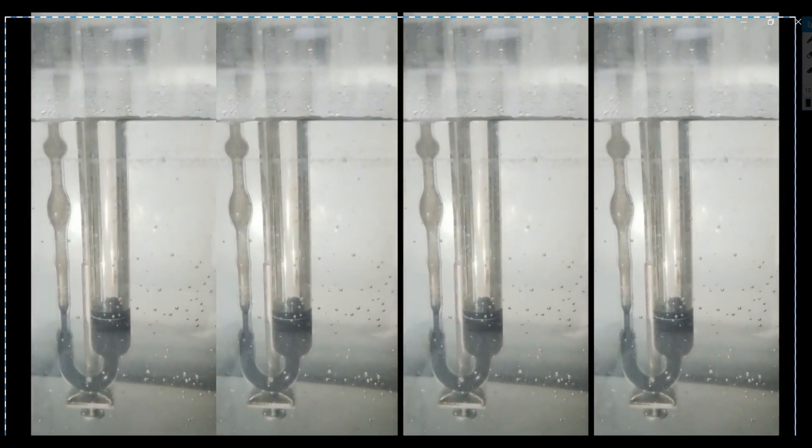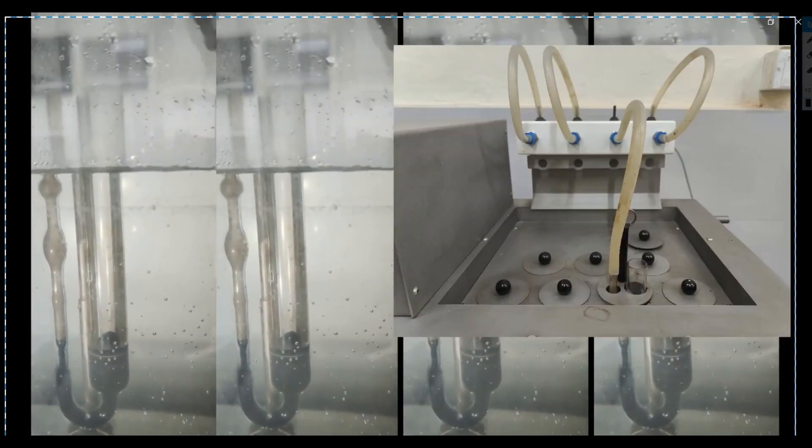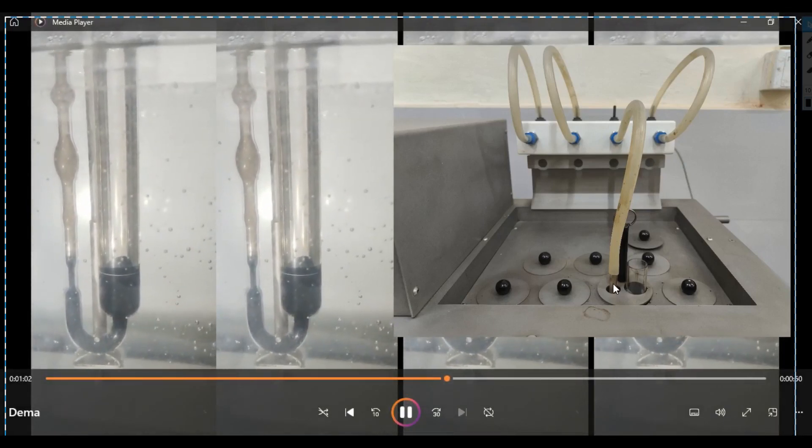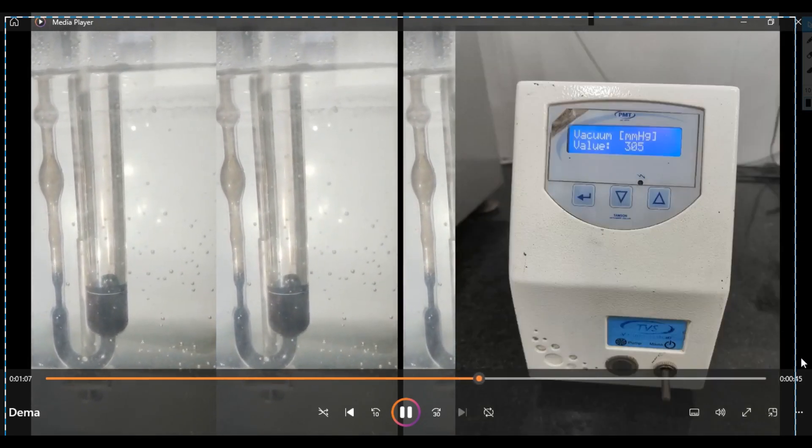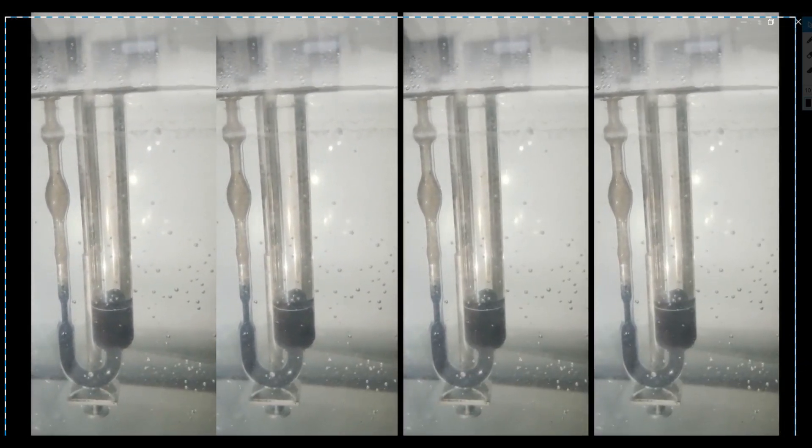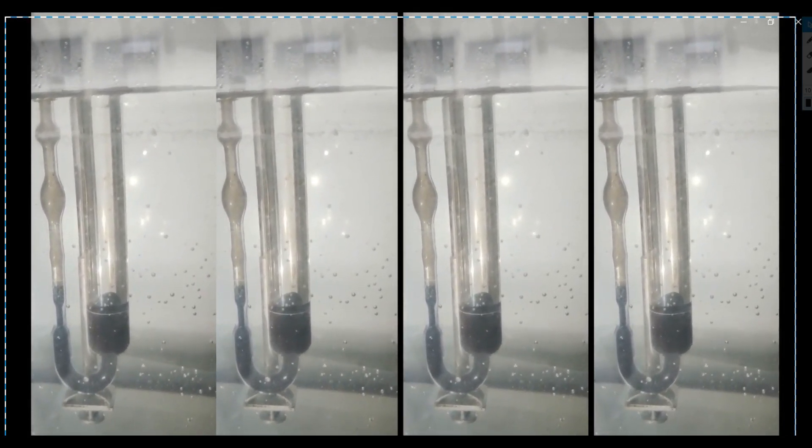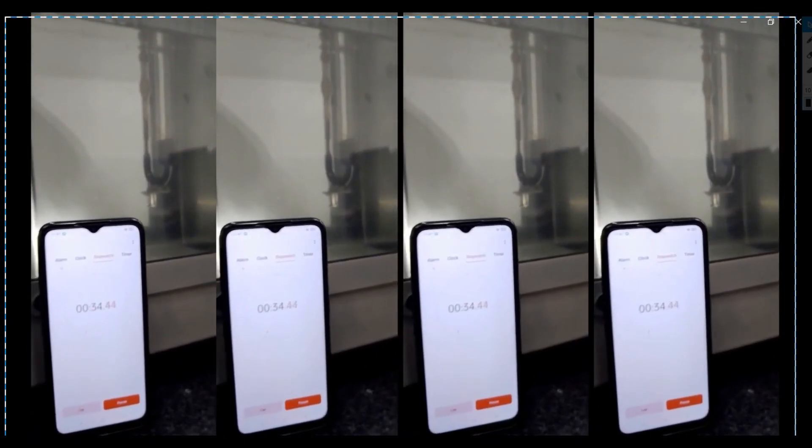After that once the temperature is achieved a partial vacuum is applied to the small side of the tube. The vacuum will cause the bitumen to flow. Application of vacuum is necessary because bitumen is too viscous to flow on its own at 60 degree centigrade. Once the bitumen starts to flow, the time in seconds required to flow between two timing marks is measured.